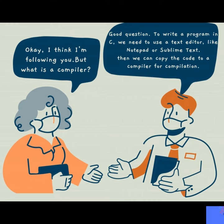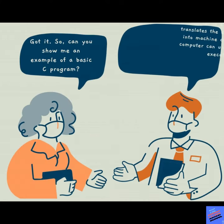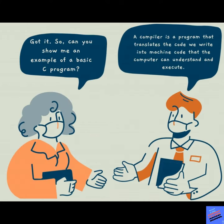But what is a compiler? A compiler is a program that translates the code we write into machine code that the computer can understand and execute. Got it. So can you show me an example of a basic C program?